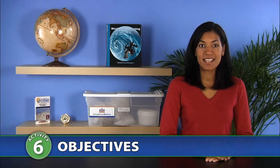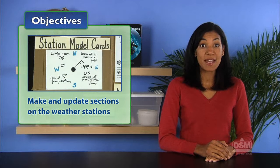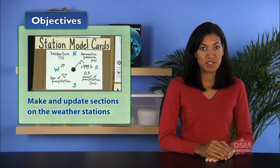In Activity 6, Decoding Weather Data, students learn to decipher the codes used on weather maps and create station model cards for local weather conditions. The students will interpret weather map symbols and make and update sections on the weather stations.